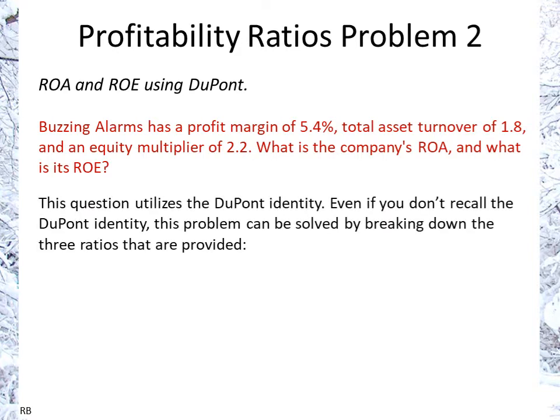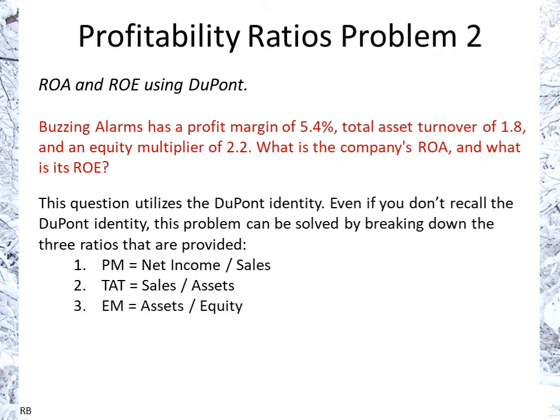This question uses the DuPont Identity, and even if you don't recall it, the problem can be solved by breaking down the three ratios that are provided here. Profit margin is net income over sales, total asset turnover is sales over total assets — or theoretically, average total assets — and equity multiplier is assets over equity.